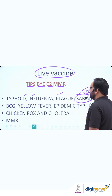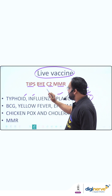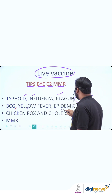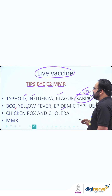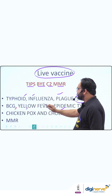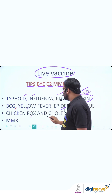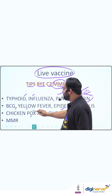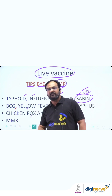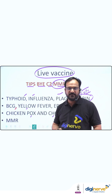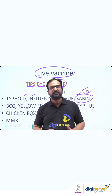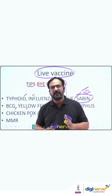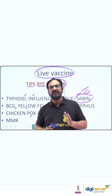Continuing: BCG, Yellow Fever, and Epidemic Typhus. C2 stands for Chickenpox and Cholera. And MMR stands for Measles, Mumps, and Rubella — which you all know. So this is the mnemonic to remember all live vaccines together.